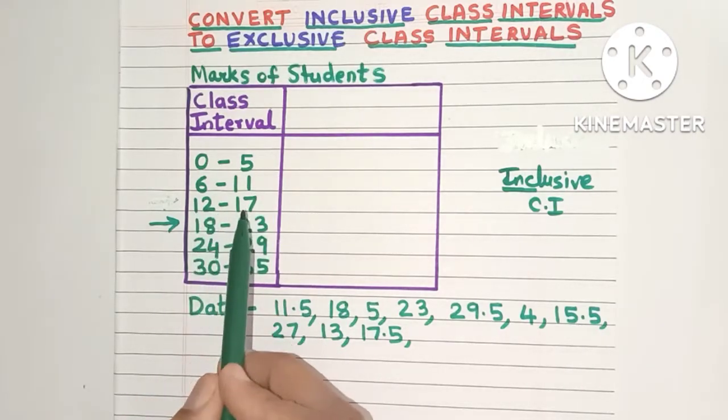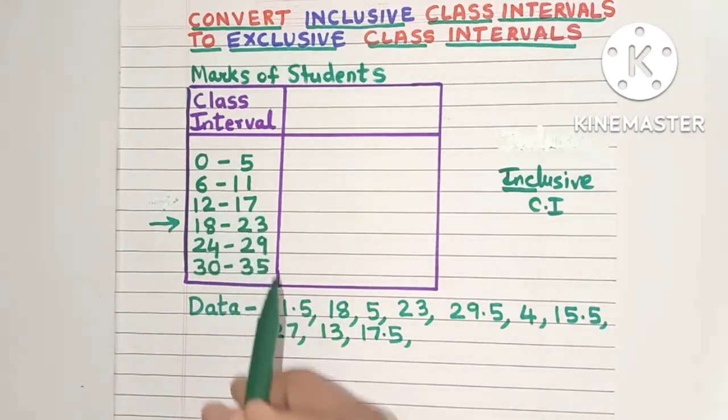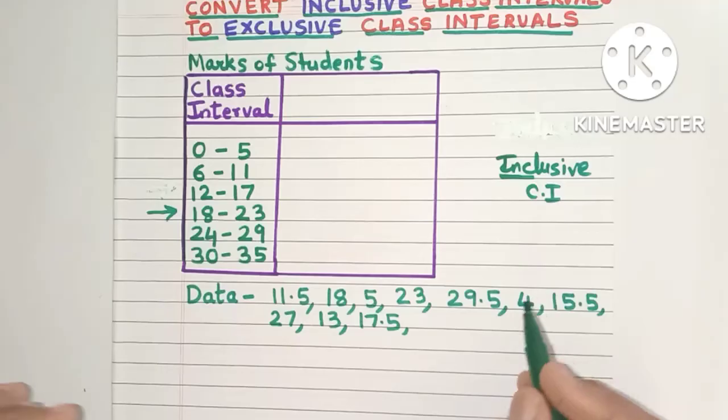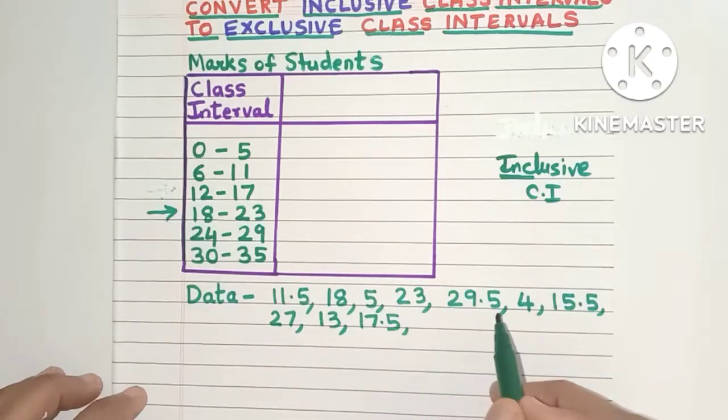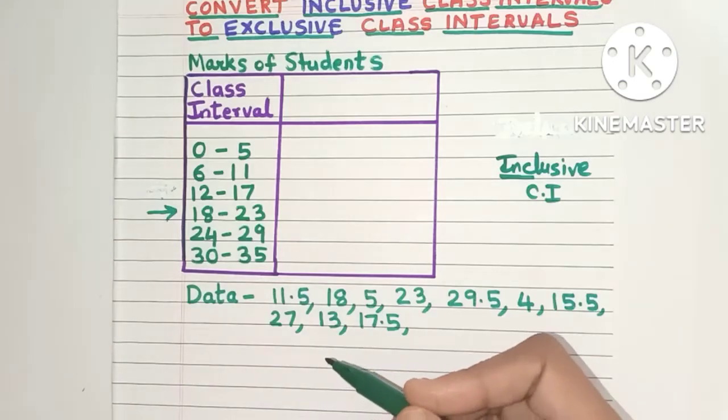What about 12 to 17? So here also 11.5 is less than 12. So it will not go in this class interval also. So 11.5 will not fit into any of the class intervals. If you also see other marks like 29.5 or 17.5 they will also not fit into any of the class intervals.